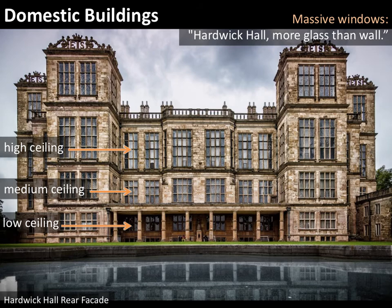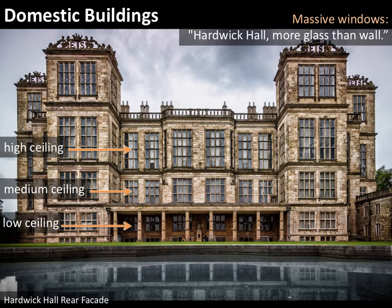This is a view of the back facade, and it feels very much like the front. Look at all that glass — this building is famous for it. At the time, people said 'Hardwick Hall, more glass than wall.' I also want to point out that each level is a different height, which is rather unique to these prodigy houses. The lowest level with kitchens and sculleries has the lowest ceiling height; above that a medium height; and the top of the building has the highest ceiling. The working people are on the lowest level and the grander people on the upper level — even the structure itself is indicative of the social importance of the people in those rooms.